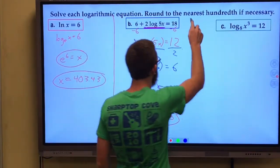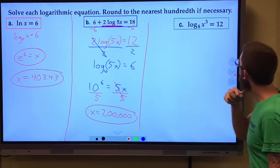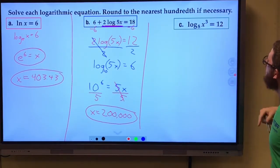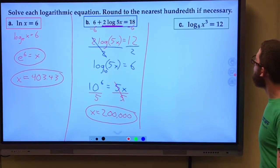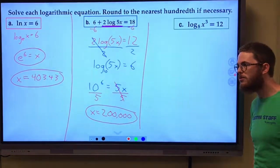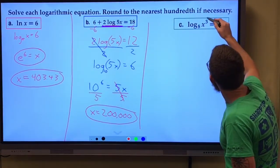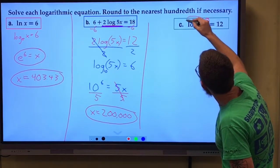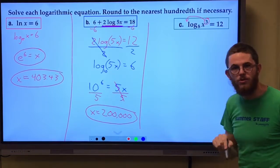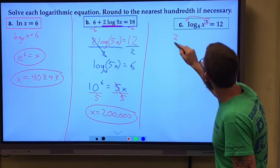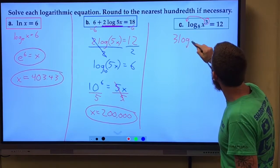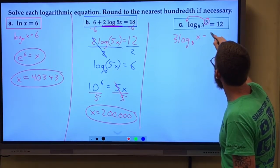Moving on to C. We have log base 8 of x^3 = 12. The first thing I'm going to do is I'm going to use that power rule to bring that exponent of three out to the front. This is 3 log base 8 of x = 12.